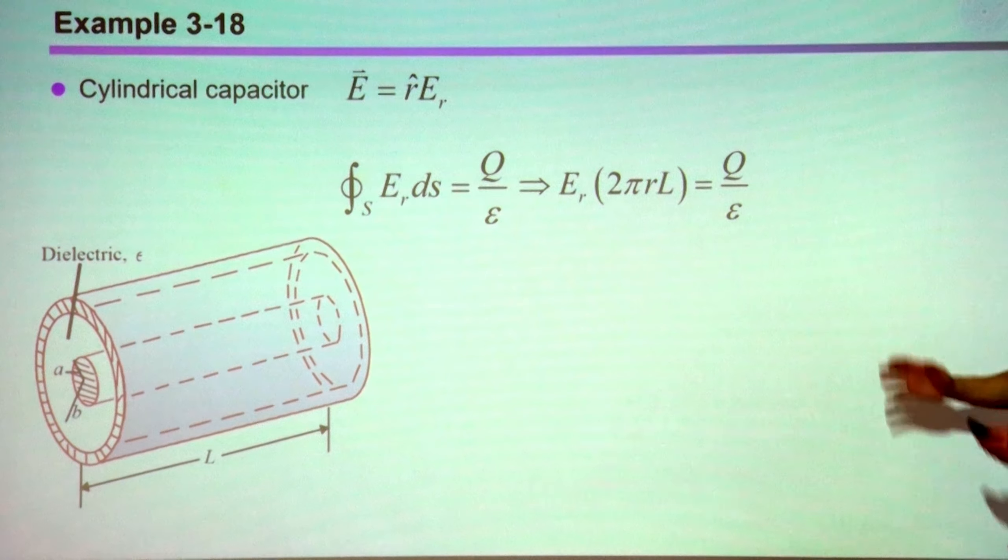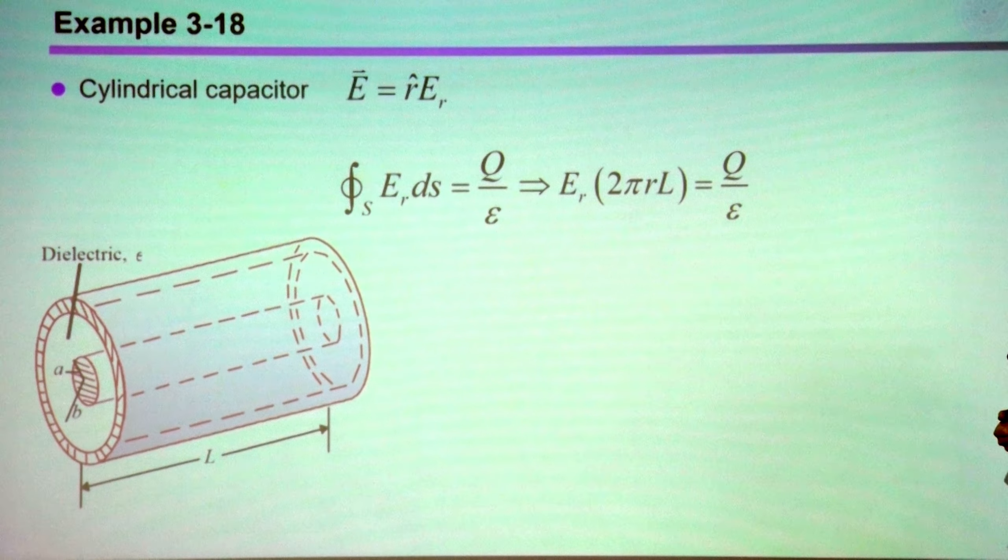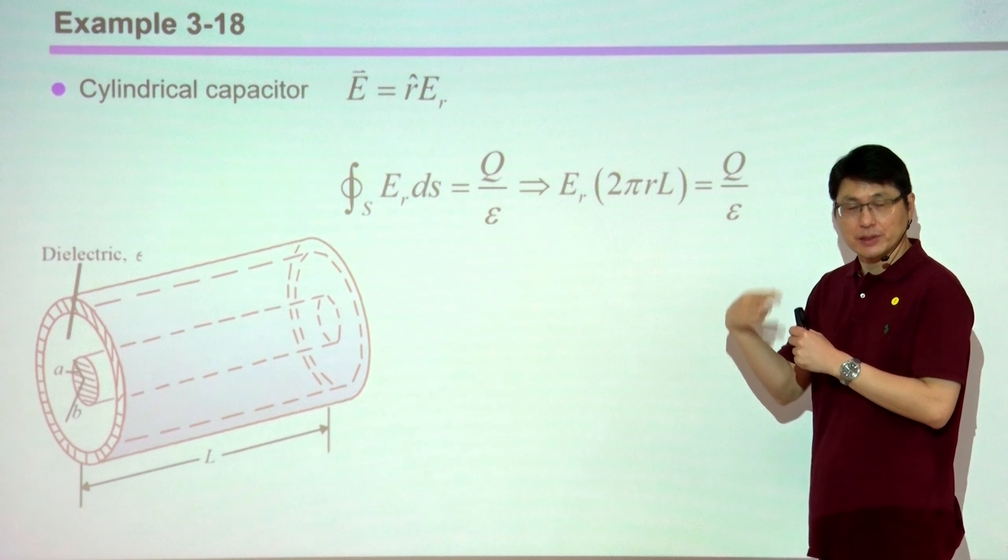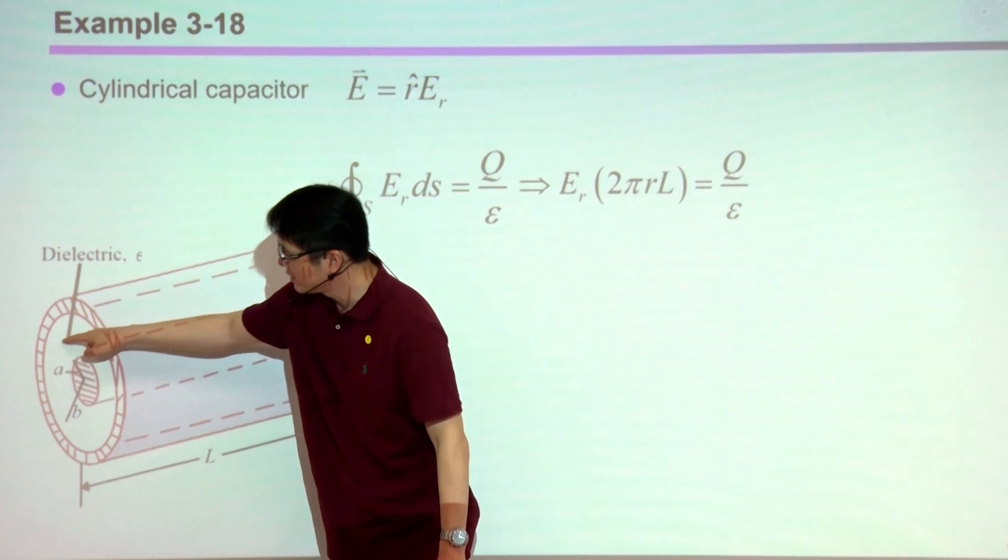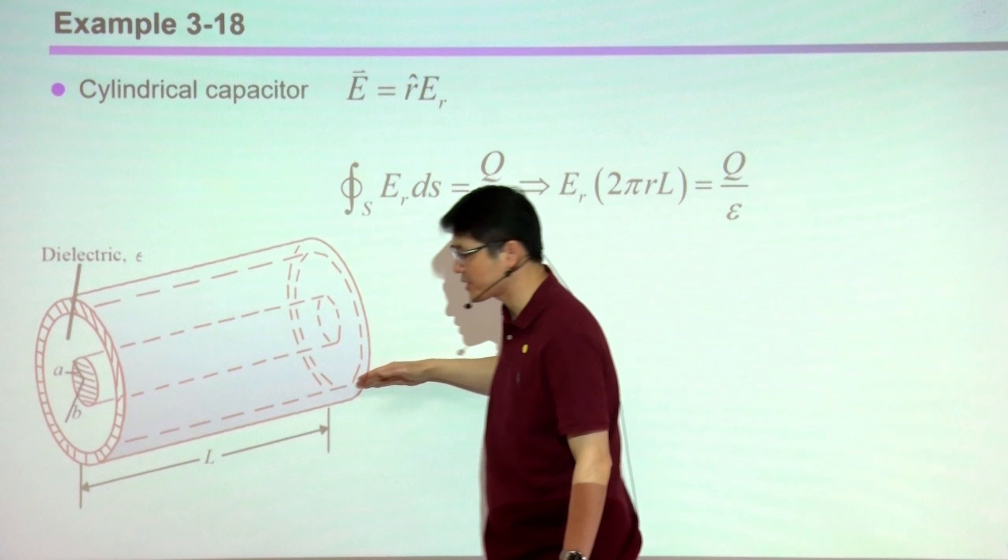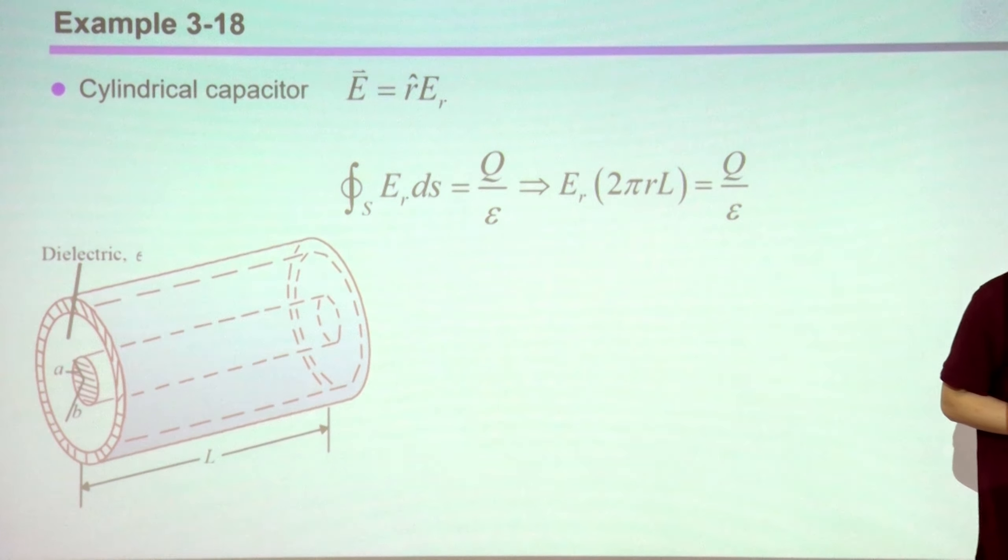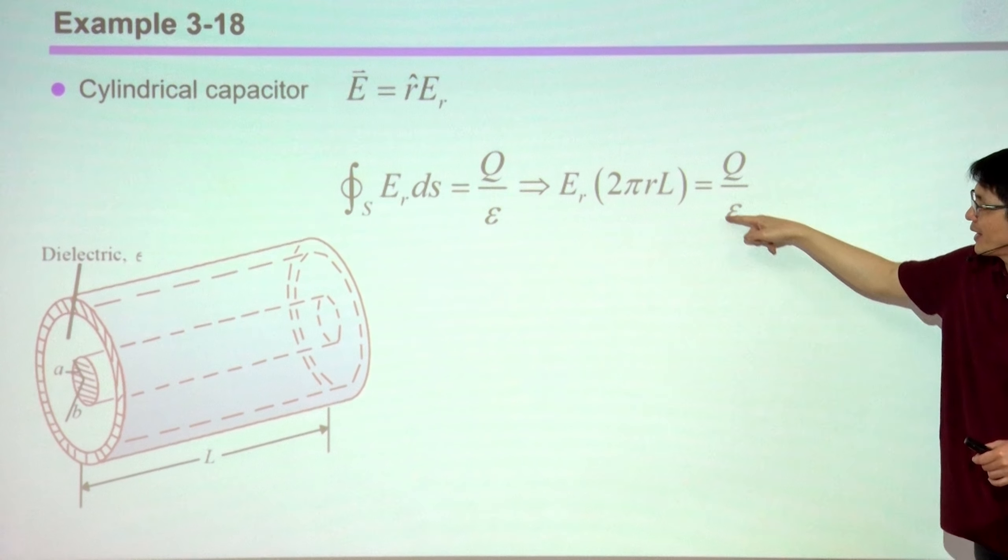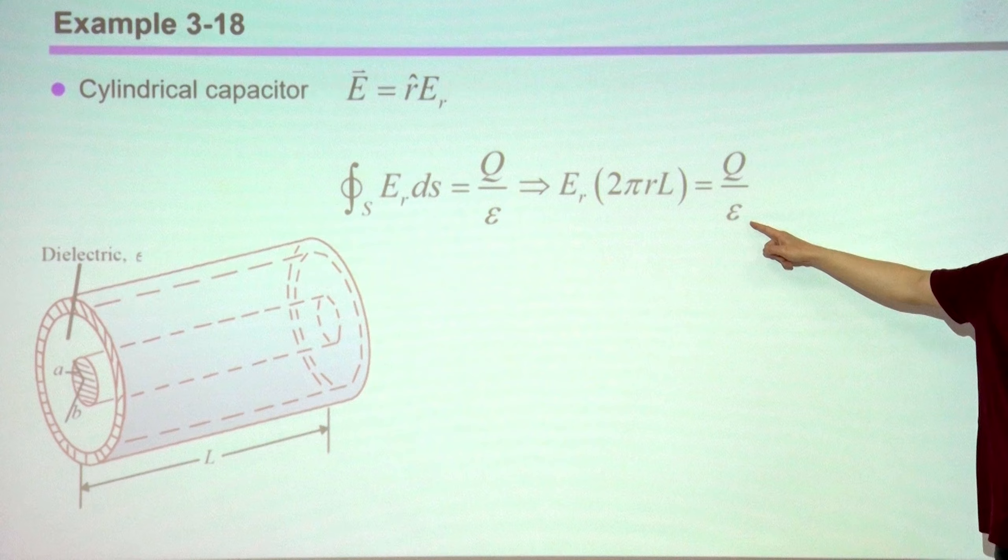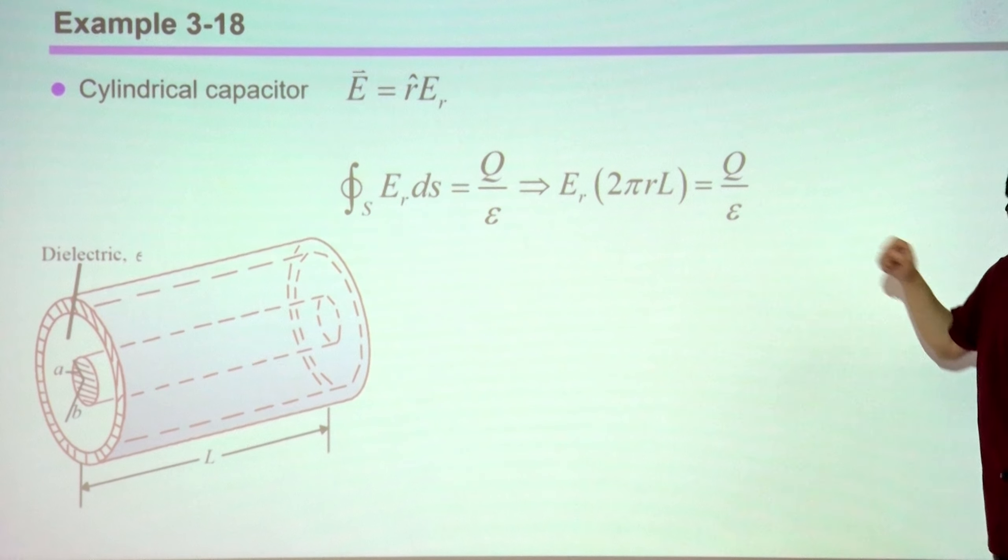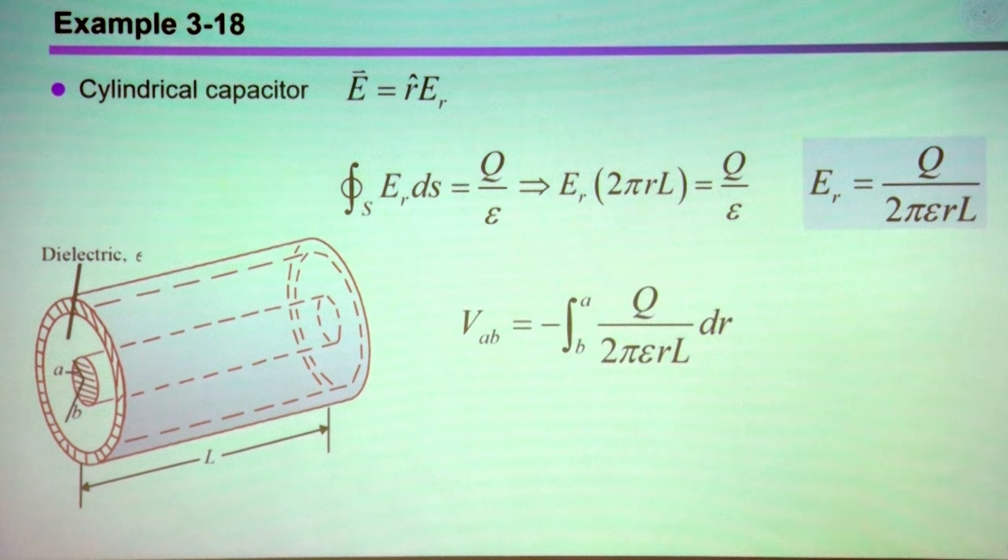I know that all the field lines are in the radial direction. Again, I'm working in the cylindrical coordinate system. I'm using this lowercase r to denote the radial direction. Using Gauss's law, 2πr. 2πr is the circumference of the circle times L. That is the surface area in the radial direction. I enclose charge of Q, but now I'm inside this dielectric. So this epsilon is really the absolute permittivity.